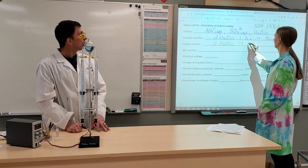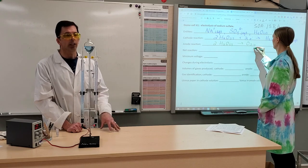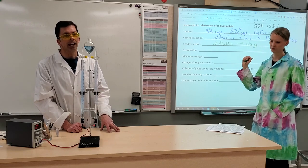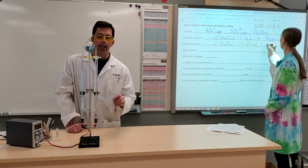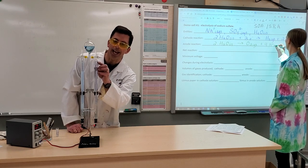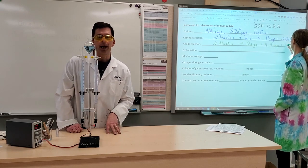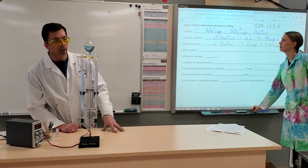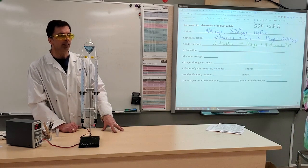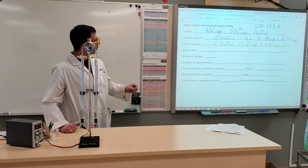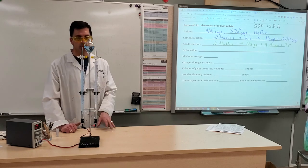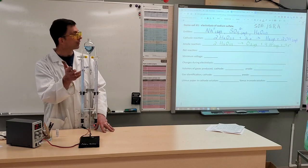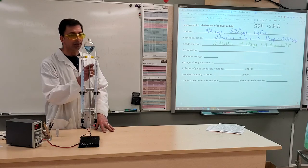So it makes sense that in our evidence, we have approximately 16.0 milliliters of hydrogen gas. In our anode, we have the oxidation of water, which produces oxygen gas. And we have roughly half the volume of gas produced, approximately 8.0 milliliters.